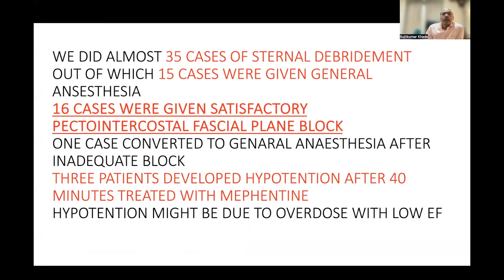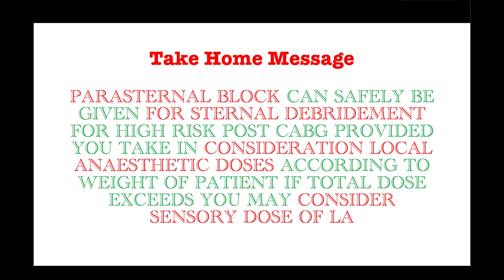We did almost 35 cases of sternal debridement, of which 15 cases were given general anesthesia, 16 cases were given satisfactory pectoral intercostal fascial plane block, and one case was converted to general anesthesia after an inadequate block. Three patients developed hypertension after 40 minutes and were treated with injection mephentine; the hypertension may have been due to local anesthetic overdose, as these post-CABG patients with low ejection fraction received 20 ml on either side. Take-home message: parasternal blocks can safely be given for debridement of high-risk post-CABG patients, but local anesthetic dose must be calculated according to patient weight.